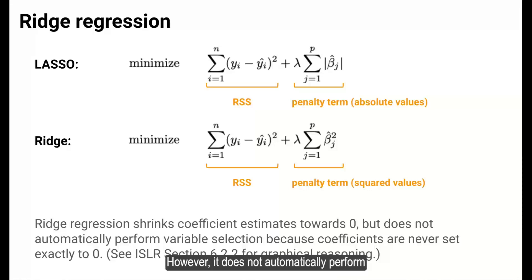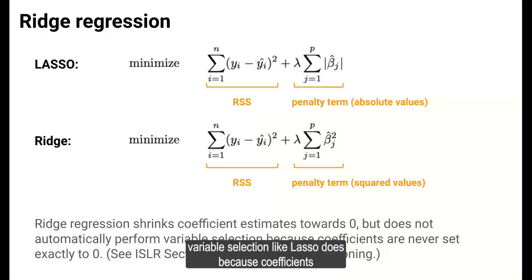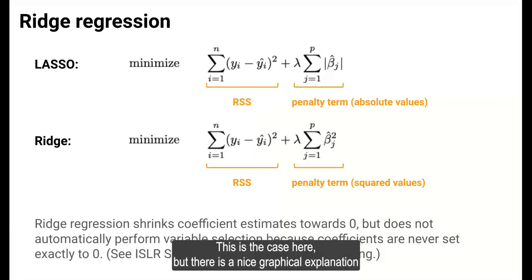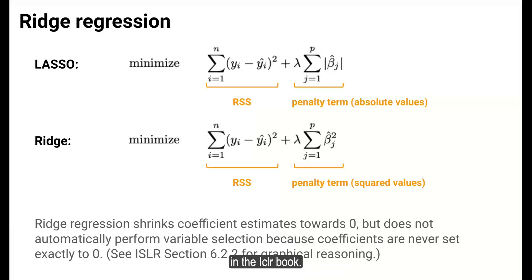However, it does not automatically perform variable selection like LASSO does because coefficients are never set exactly to 0. We won't get into why this is the case here, but there's a nice graphical explanation in the ISLR book.